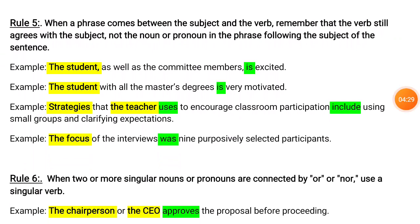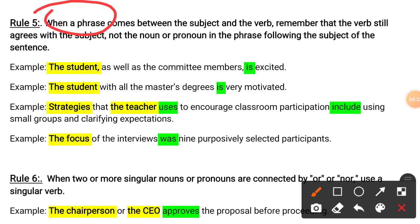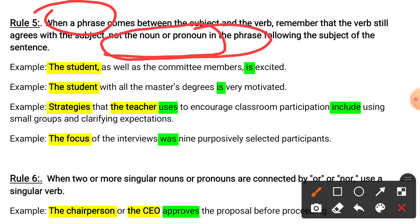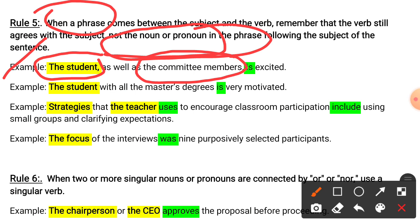Rule five says that when a phrase comes between the subject and the verb, the verb still agrees with the subject — not the noun or pronoun in the phrase following the subject. For example: 'The student as well as the committee members is excited.' Here, 'as well as' is a phrase that comes between the two parts.